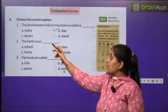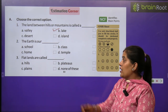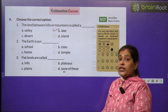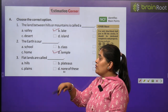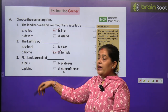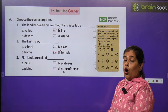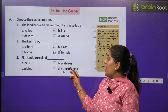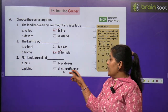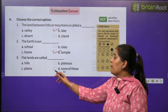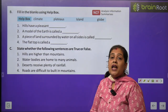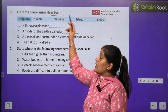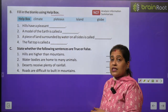Number two: The Earth is our — Earth kya hai hamara? School, class, home or temple? The correct option is home. Number three: Flatlands are called — flatlands ko kya kehte hain? Hill, plateau, plain, or mountain? The correct option is plains.